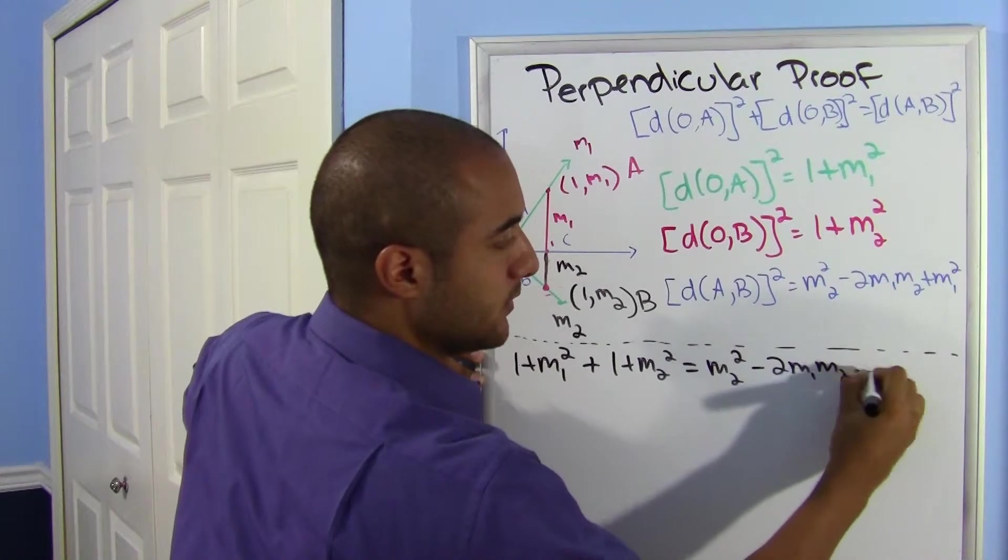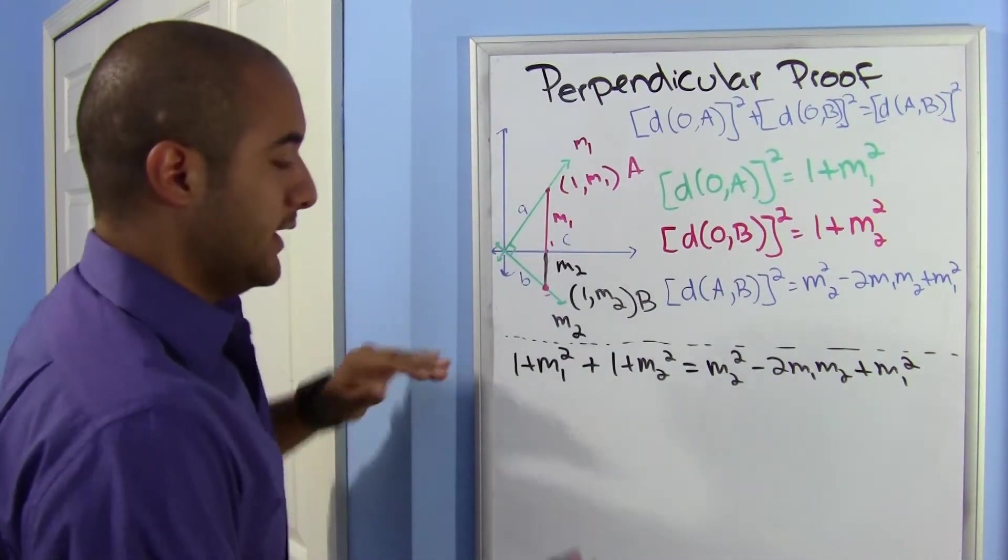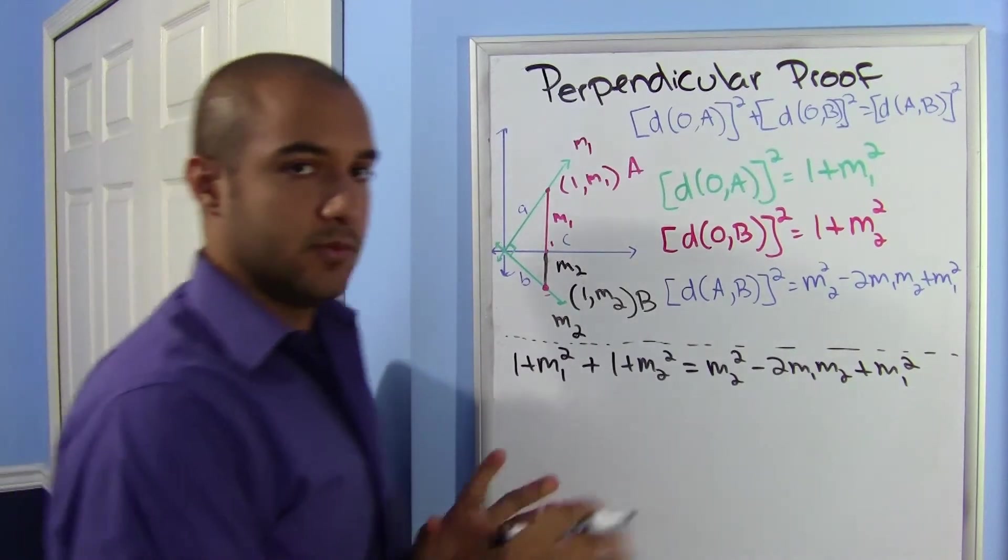Equal to from AB² and that's m2² - 2m1m2 + m1². All right, let's go ahead and simplify it and see what we can do.